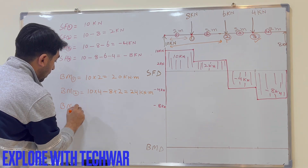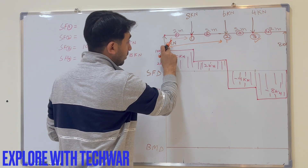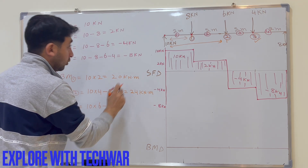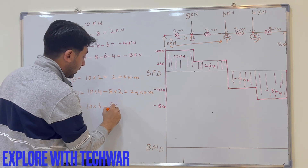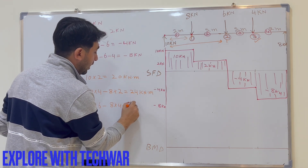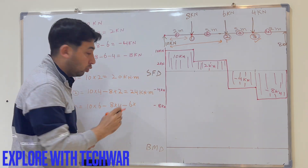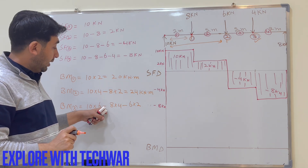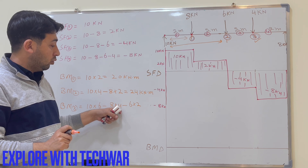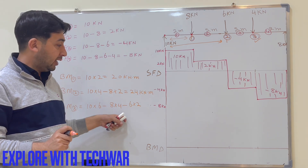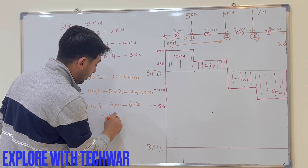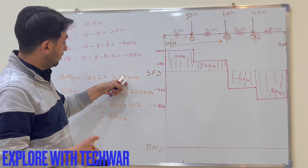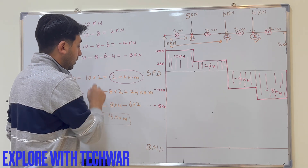Bending moment at point 3: 10 kN is at a distance of 6 m, 8 kN is at 4 m, and 6 kN is at 2 m. So BM = 10 × 6 minus 8 × 4 minus 6 × 2 = 60 minus 32 minus 12 = 16 kNm.